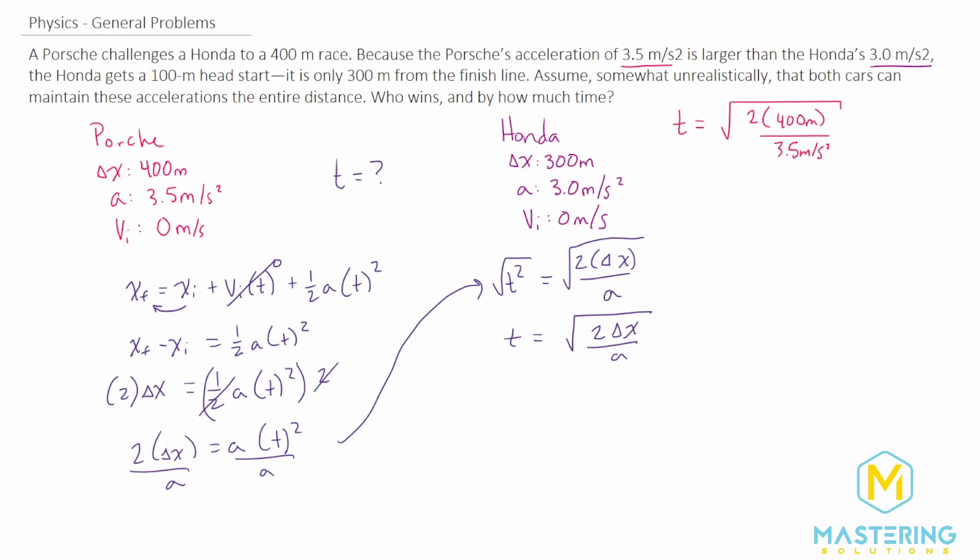I'm going to write both of them down so we can do them at the same time in the calculator. And t is going to be equal to 2 times 300 meters divided by the slower acceleration of 3 meters per second squared.